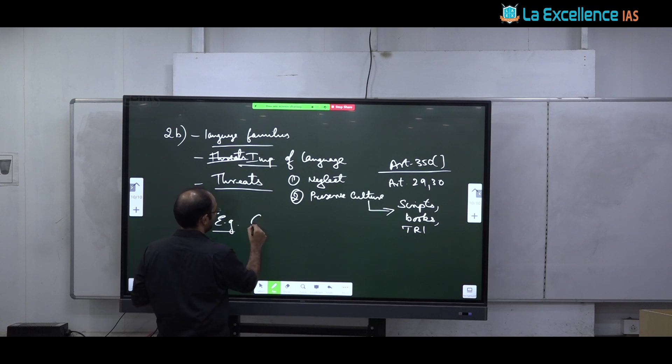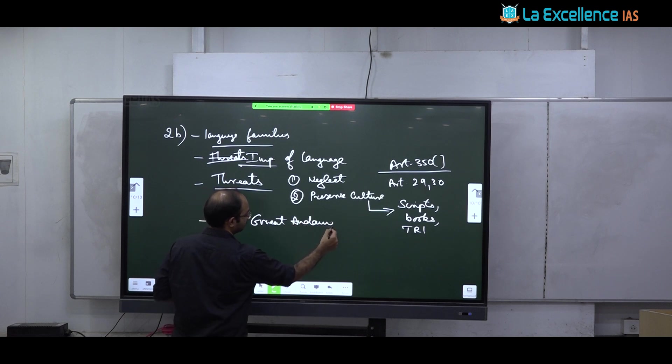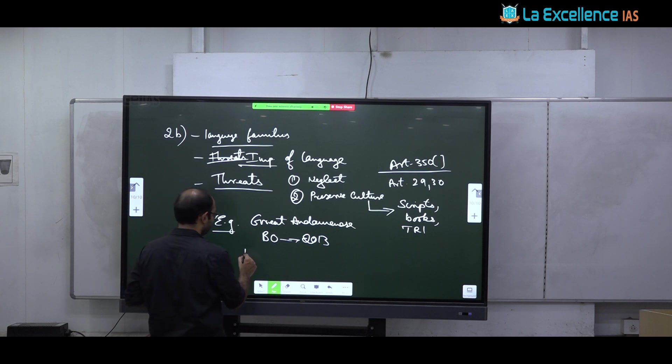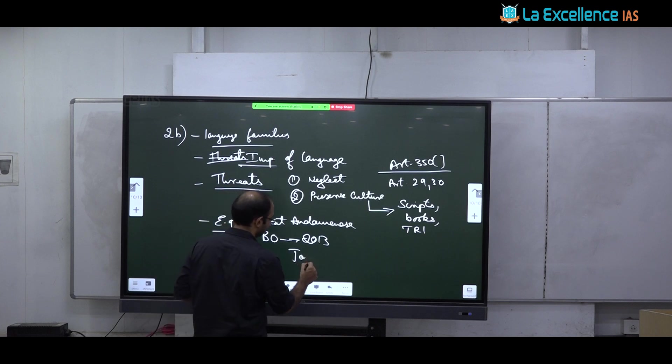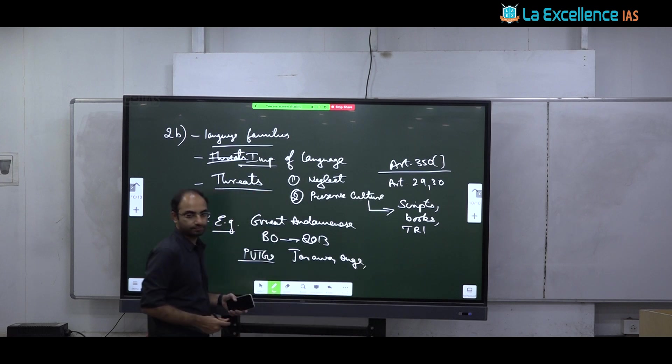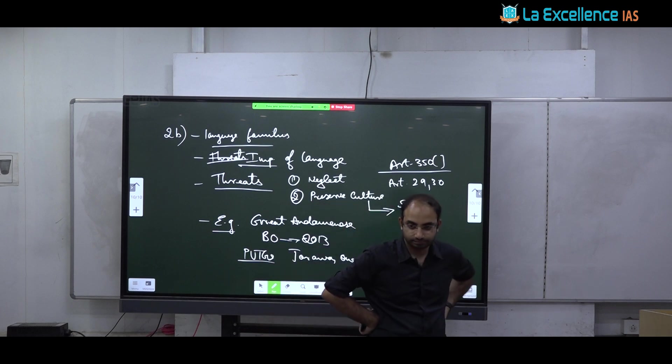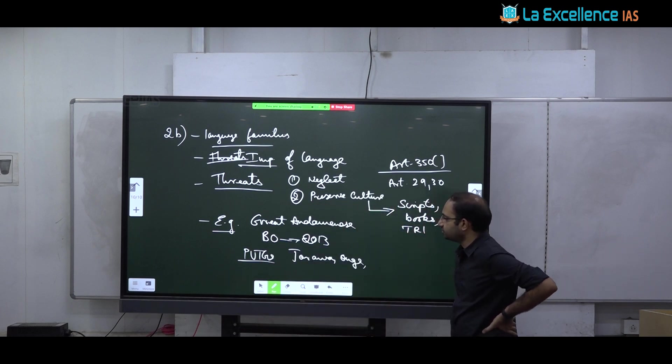And give examples of such extinction. For example, the great Andamanis, they have lost their language. Today they speak Hindi. Recently, one tribe called the Bo became extinct in 2013. Last member of this Bo tribe died in 2013. And many PVTGs are on the path of on the verge of extinction. Jaravas are one example. For example, the Onge, even Chenchus. For example, Chenchu people today speak Telugu. They do not have Chenchu language anymore. So this is how the language is being lost.